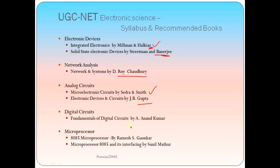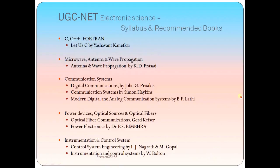For digital circuits, the best book is Anand Kumar's 'Fundamentals of Digital Circuits.' For microprocessors, Ramesh Gaonkar is the best book, particularly for the 8085 microprocessor. For 8086 and other interfacing like 8254, the book by Sunil Mathur is recommended. For C, C++, or Fortran, a lot of online resources are available; for a book, Yashwant Kanetkar's 'Let Us C' is recommended. For Microwave and Antenna Wave Propagation, K.D. Prasad is the best book.